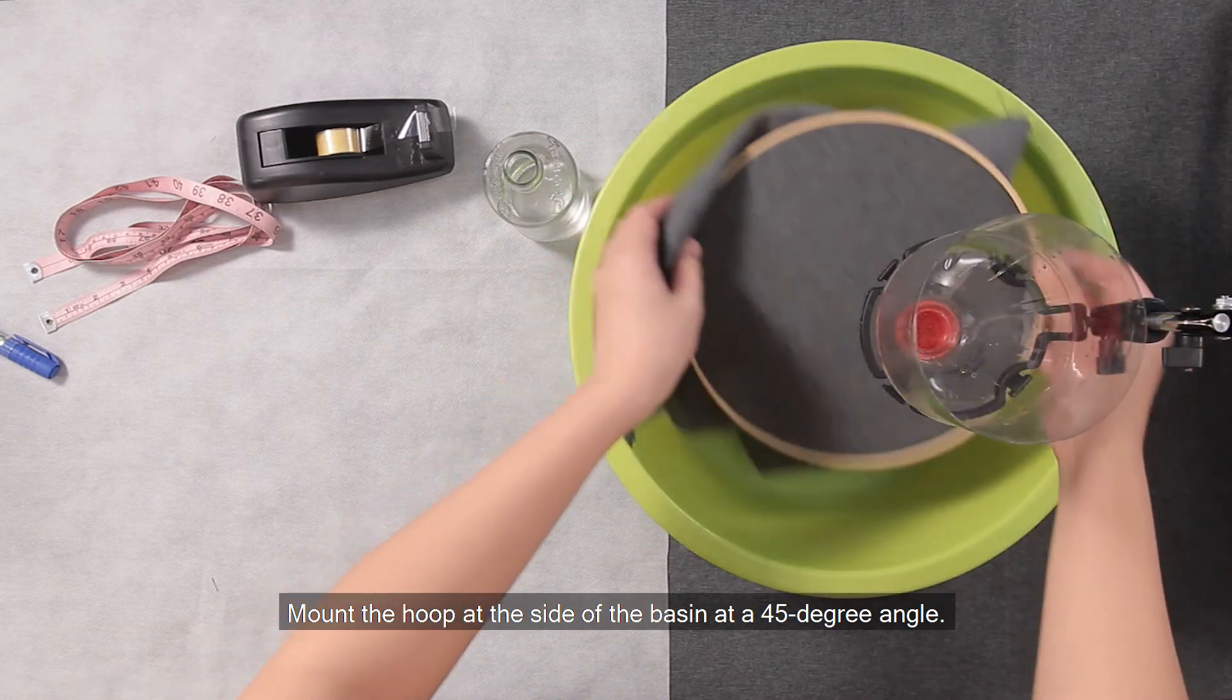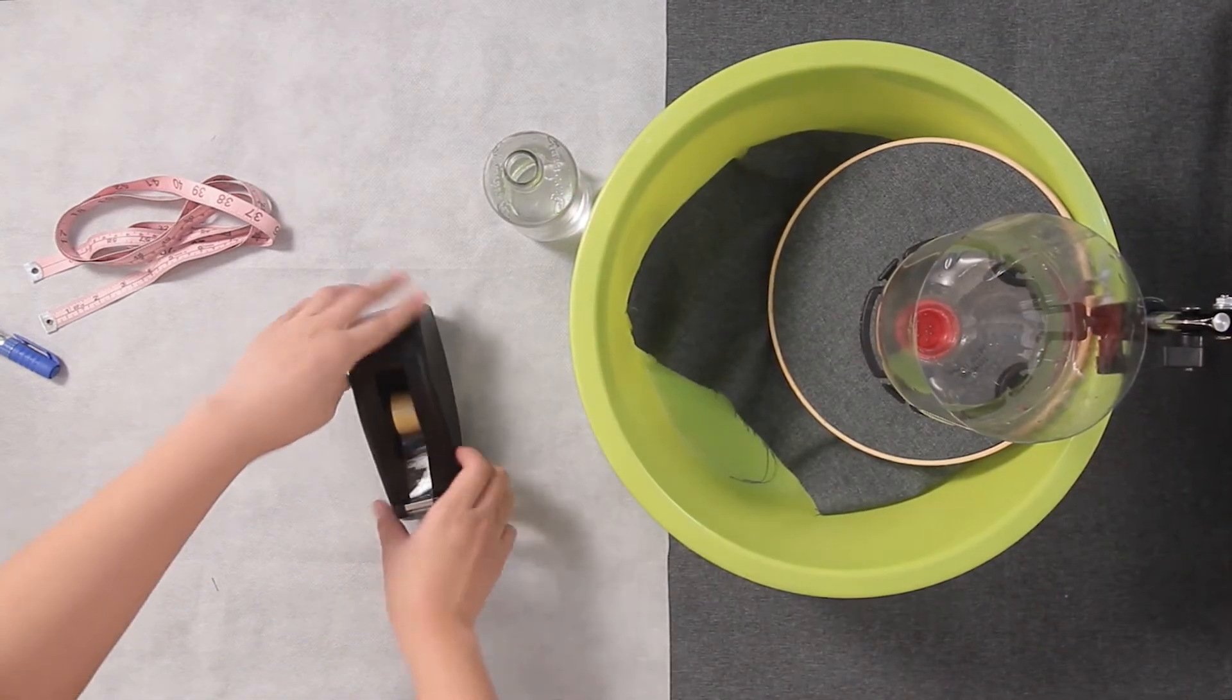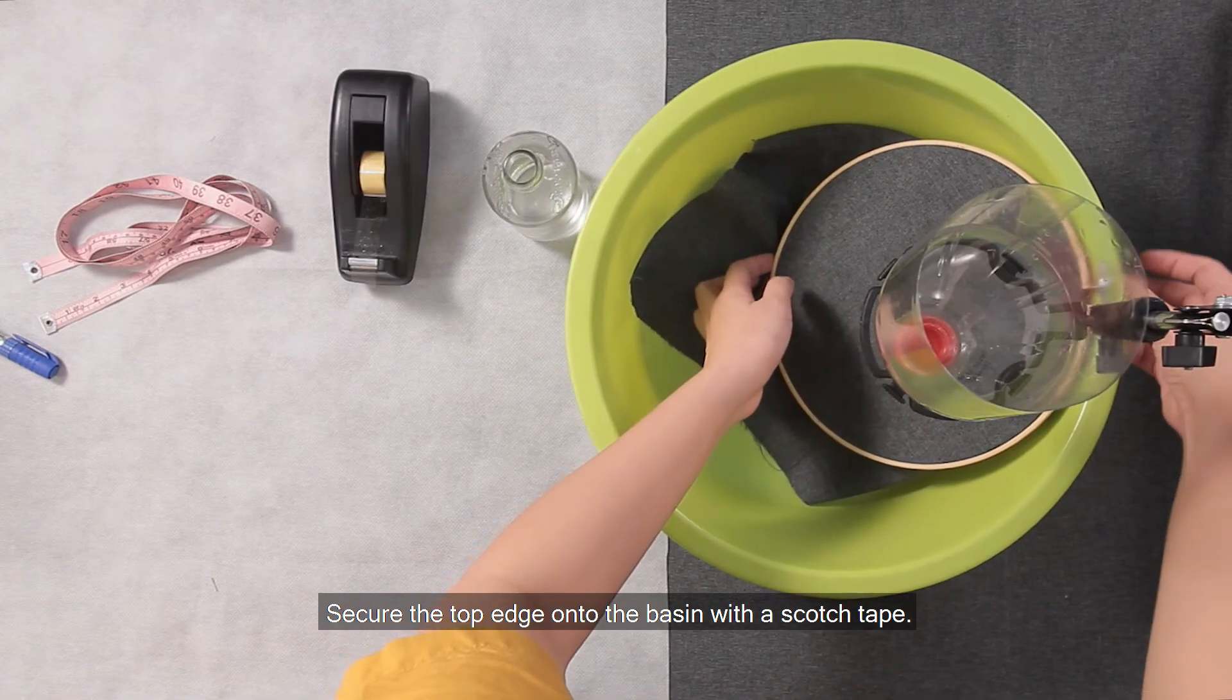Mount the hoop at the side of the basin at a 45-degree angle. Secure the top edge onto the basin with scotch tape.